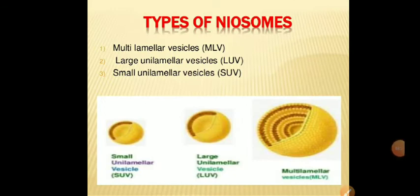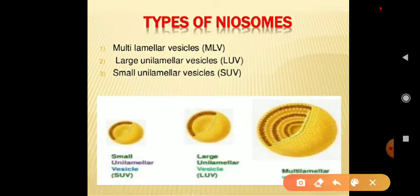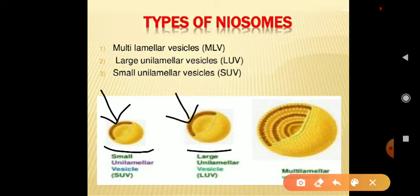There are three main types of niosomes: multilamellar vesicles, large unilamellar vesicles, and small unilamellar vesicles. We can see these three structures — small unilamellar vesicles, large unilamellar vesicles, and multilamellar vesicles. They vary according to their size.